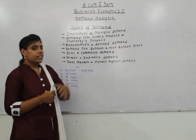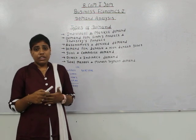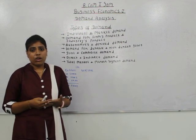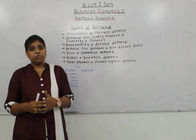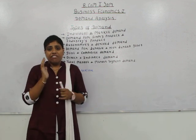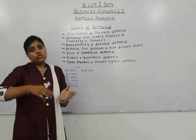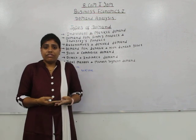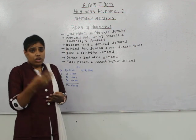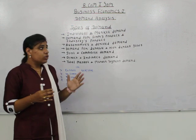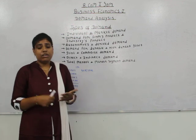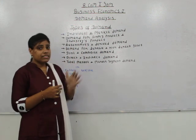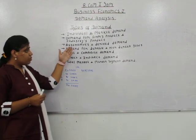When we talk about the demand for a product of a particular firm in a market, it is known as demand for the firm's product — for example, demand for Toyota cars in the market for a particular period of time. But when we talk about the demand for cars of various brands like Toyota, Bajaj Auto, Tata Motors, TVS Motors, etc., together, it is known as the demand for the industry's product — in this case, the automobile industry.